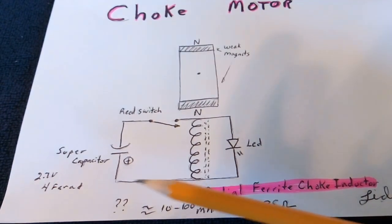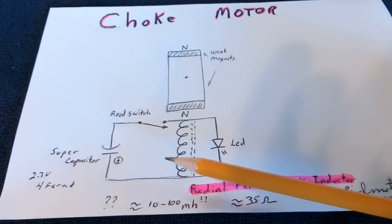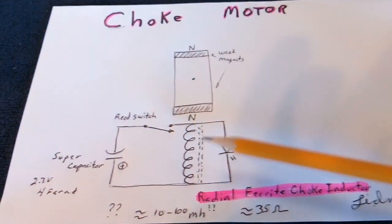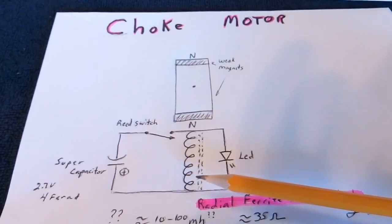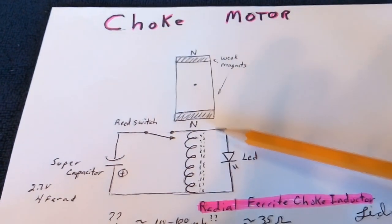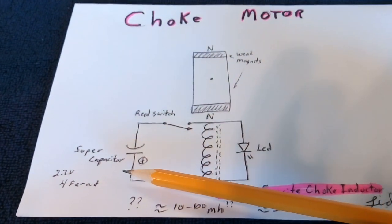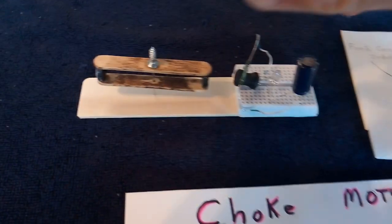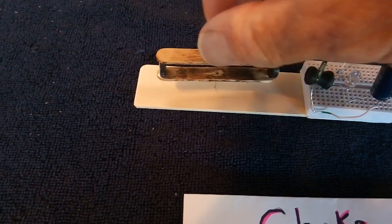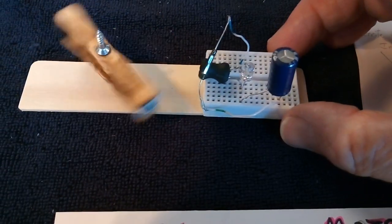They call this the flyback, but I've had this explained another way - that really the energy in that coil is not going backwards, it's actually going around like this. I think that's one of the reasons this thing works the way it does. The energy is going right back into that capacitor through that LED.